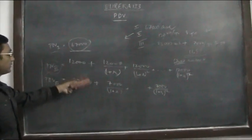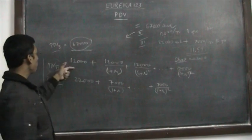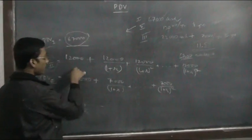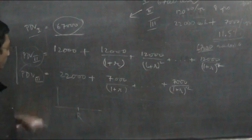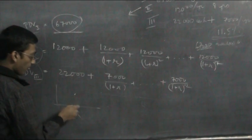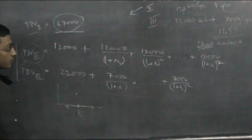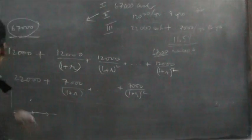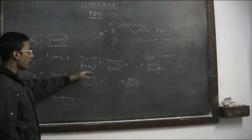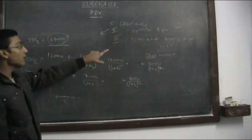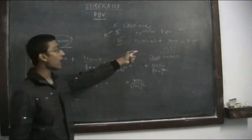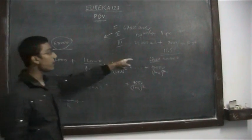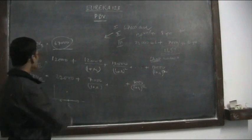We know that the PDV of the second and third options are less than the PDV of the first option. But there will be one interest rate, call it capital R, for which both of them are equal. For rates less than R, one option will be suitable, and for rates greater than R, the other option is suitable. For example, at 11.5% we may prefer option 2; at R = 12% both options may be equal, making us indifferent; at 13% option 3 may be preferred. So we cannot get a unique answer — it depends on the interest rate.